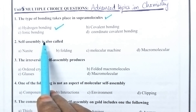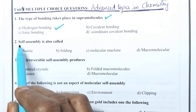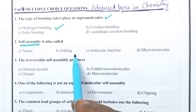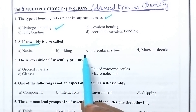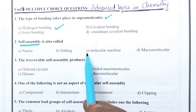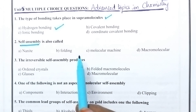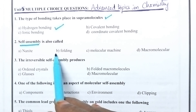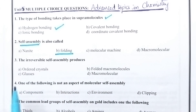Self-assembly is also called — especially, self-assembly is the process which results in the formation of stable structures due to the folding process. So option B, folding, is the right option.